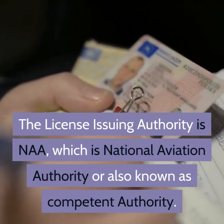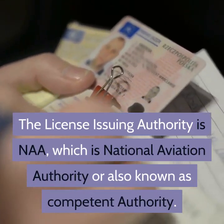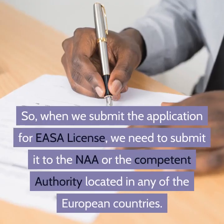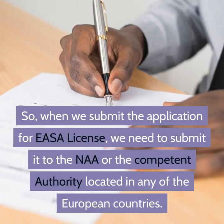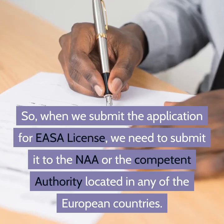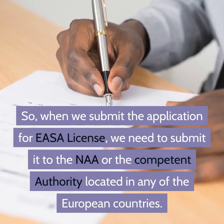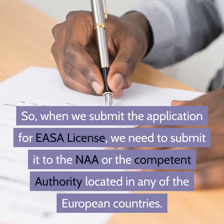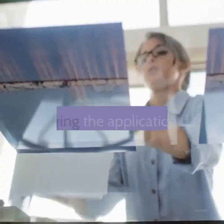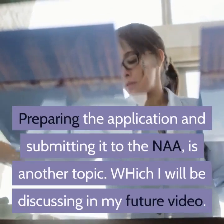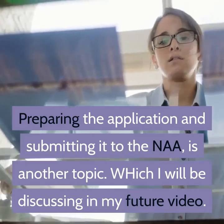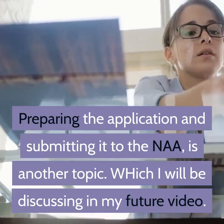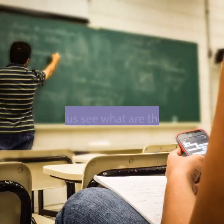It is important to remember that EASA does not issue the license. The license issuing authority is the NAA, which is the National Aviation Authority, also known as the competent authority. When submitting the application for an EASA license, you need to submit it to the NAA or competent authority located in any of the European countries. This will be discussed further in a future video.